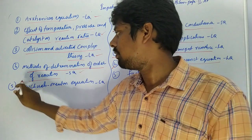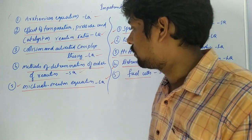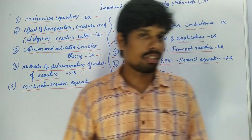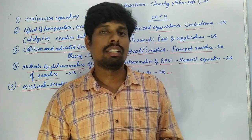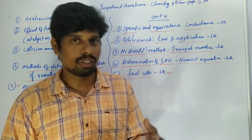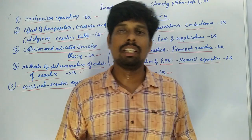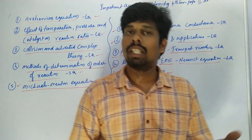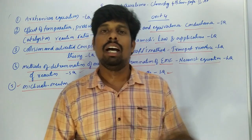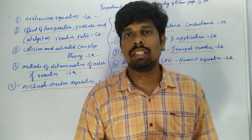Finally, the Michaelis-Menten equation is a long answer question. In summary, there are 25 questions — both long answer and short answer — covering 60 to 80 percent of likely exam questions, about 100 questions total. At least 80 percent score is possible. I hope you subscribe, like, and share. Thank you very much.